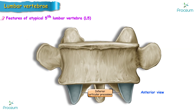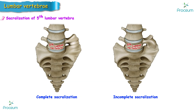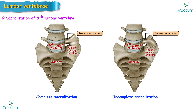The distance between the inferior articular processes is equal to or greater than that of the superior articular processes. Sacralization of the fifth lumbar vertebra refers to the fusion of the fifth lumbar vertebra with the sacrum; the fusion may be complete or incomplete. The transverse process of L5 may articulate with the ala of the sacrum and/or the ilium and compress the L5 spinal nerve. This condition occurs in about 5% of normal individuals.